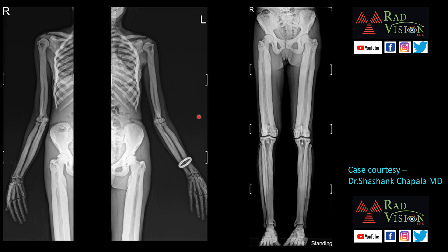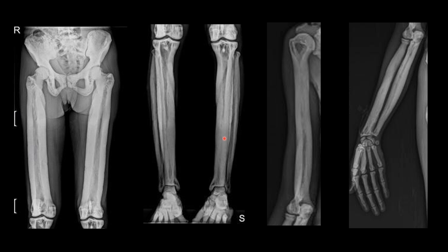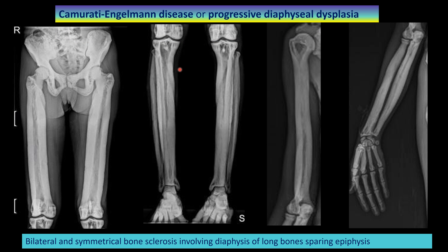The next case is a long bone skeletal survey and standing radiograph — thanks to Dr. Shashank Chapala for contributing. There is symmetrical bilateral sclerosis involving the diaphysis with sparing of the epiphysis, i.e., diaphyseal sclerosis involving all long bones. This is a classical case of Camurati-Engelmann disease or progressive diaphyseal dysplasia.